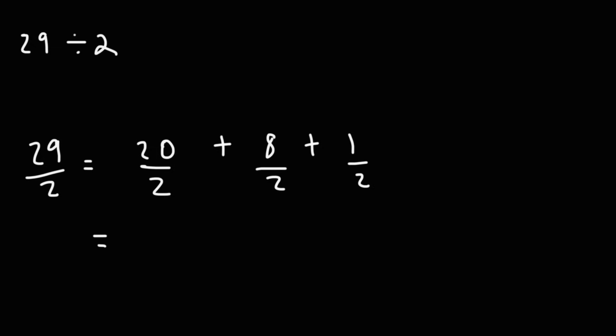And each of these numbers, I'm going to divide them by 2. 20 divided by 2 is 10, 8 divided by 2 is 4, 1 divided by 2 is a half or 0.5. 10 plus 4 is 14, and then if you add 0.5 to that, you're going to get 14.5.